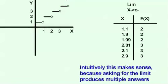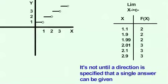Intuitively, this makes sense, because asking for the limit produces multiple answers. It is not until a direction is specified that a single answer can be given in this case.